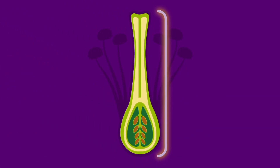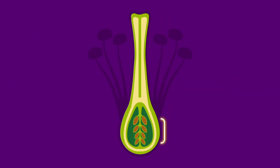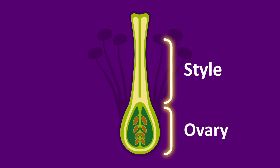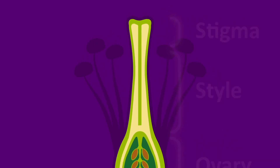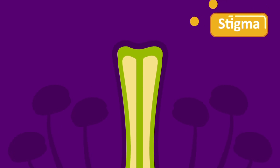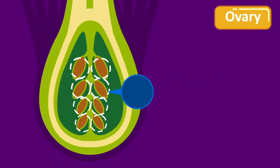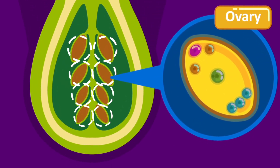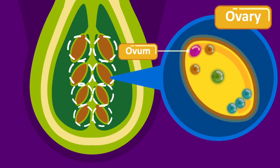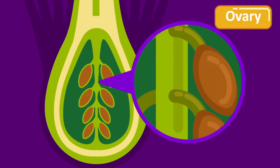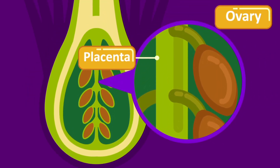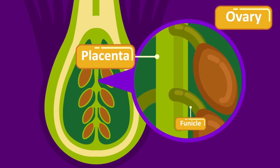The pistil, also known as the gynoecium, is the female part of the flower. It consists of one or more units called carpels. A carpel consists of an ovary, a style above the ovary, and one or more stigmas. The stigma is a swollen structure at the end of a style which receives the pollen grains. The ovary contains one or more ovules. A mature ovule has a female gamete inside called the ovum. The region in the ovary to which the ovules are attached is called the placenta, and the ovule is attached to the placenta by a funicle.